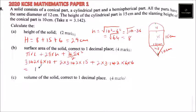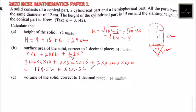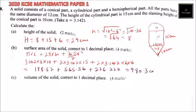You will get 188.52 for the cone, then add 565.56 for the cylinder, then add 226.224 for the hemisphere. When you add all of that together, you get 980.3 centimetres squared.